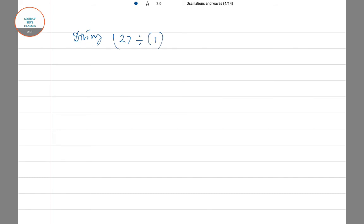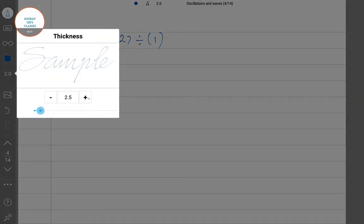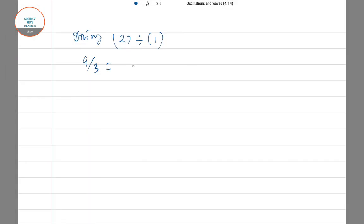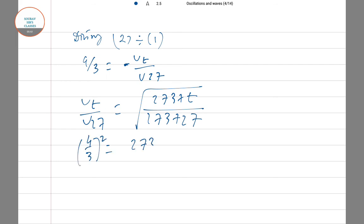So v_T/v₂₇ = √((273+T)/(273+27)). Therefore (4/3)² = (273+T)/300. Solving this, we get 260.3 degrees Celsius.